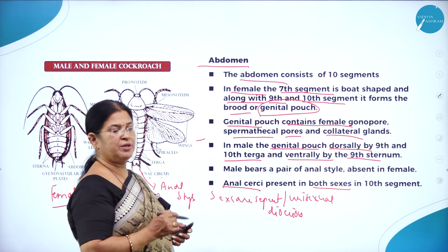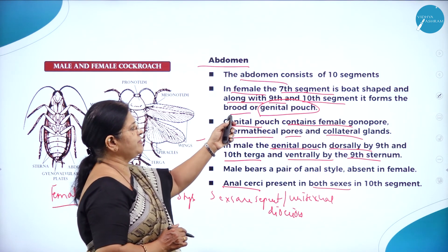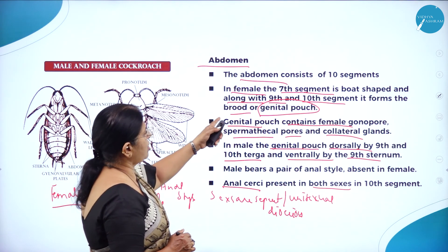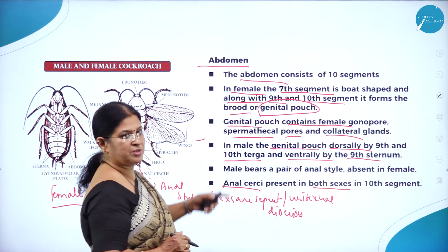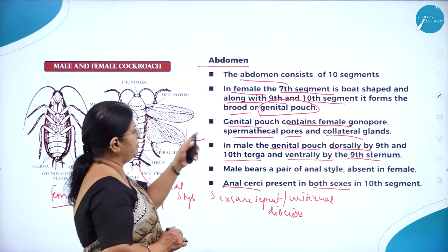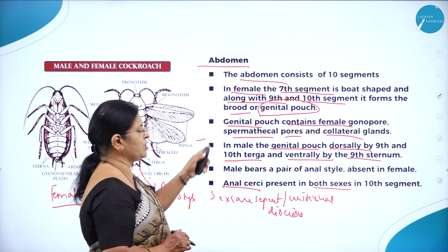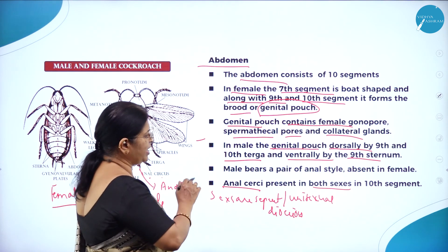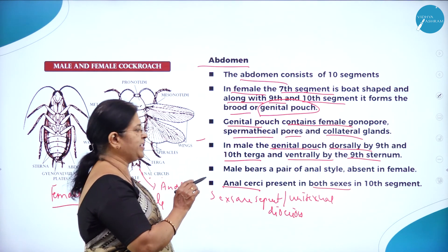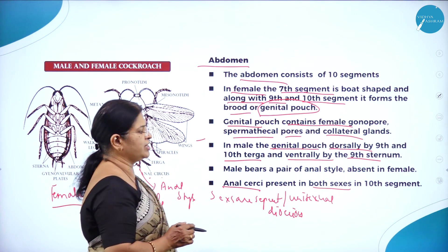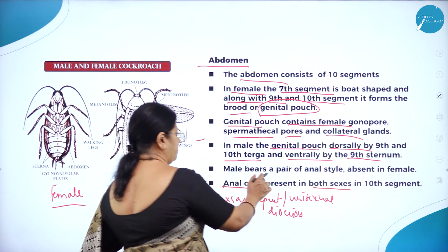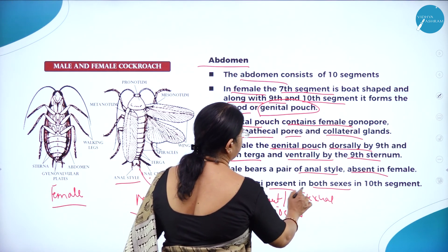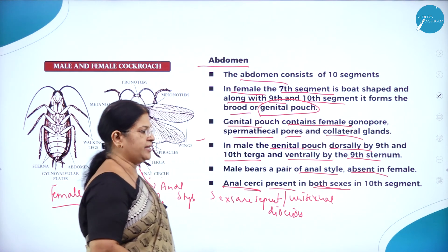To summarize the abdomen: it consists of 10 segments. In the female, the seventh segment is boat-shaped and together with the ninth and tenth segments forms the brood or genital pouch, containing the female gonopore, spermathecal pores, and collateral glands. In males, the genital pouch is formed dorsally by the ninth and tenth terga and ventrally by the ninth sternum. The male bears a pair of anal styles, which are absent in females. Anal cerci are present in both sexes in the tenth segment.